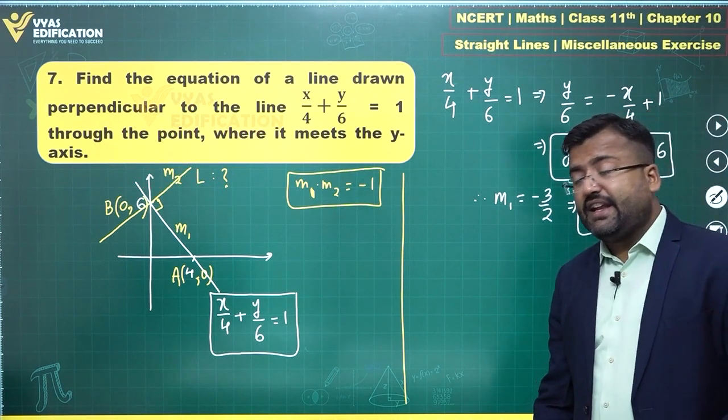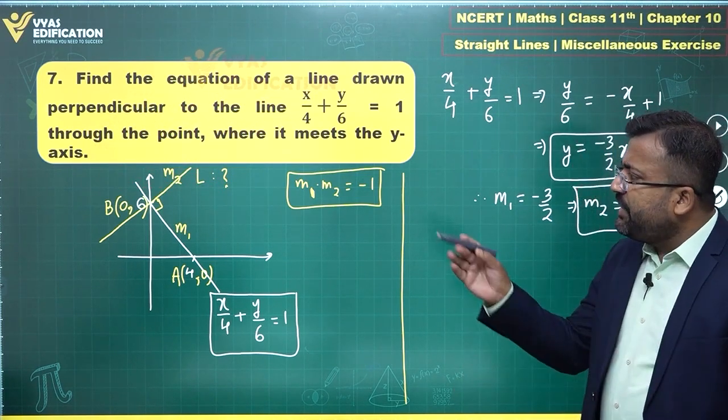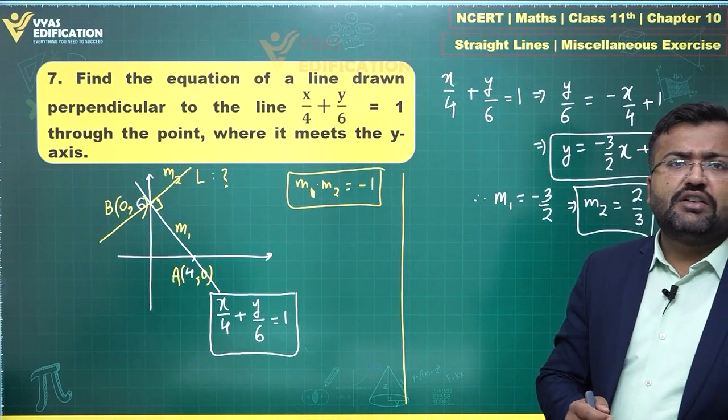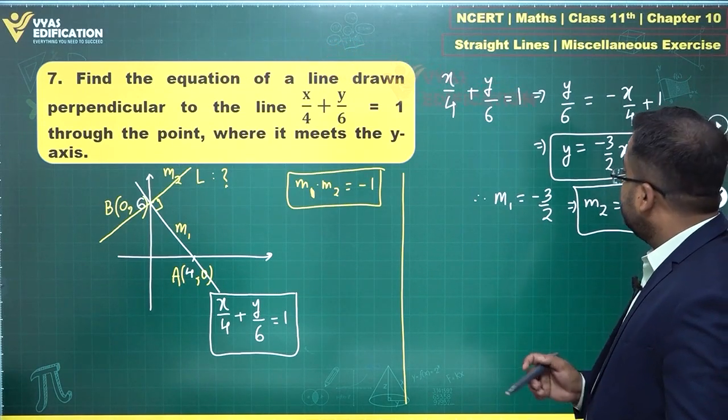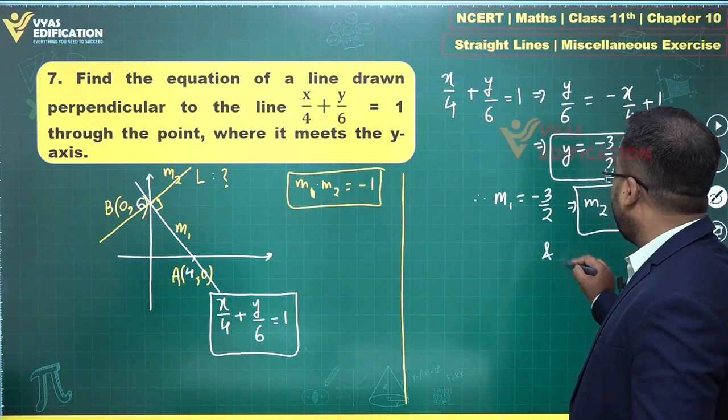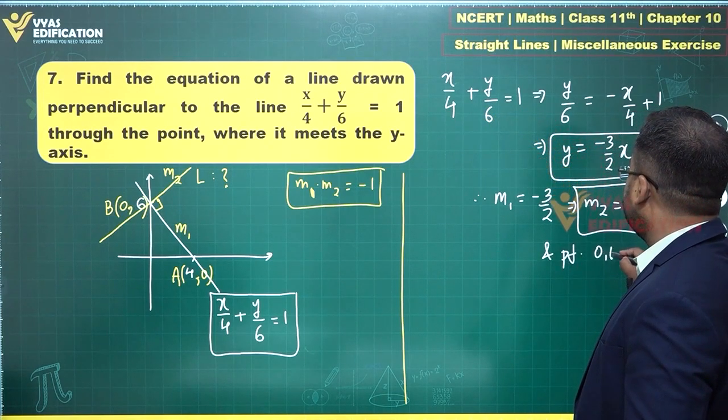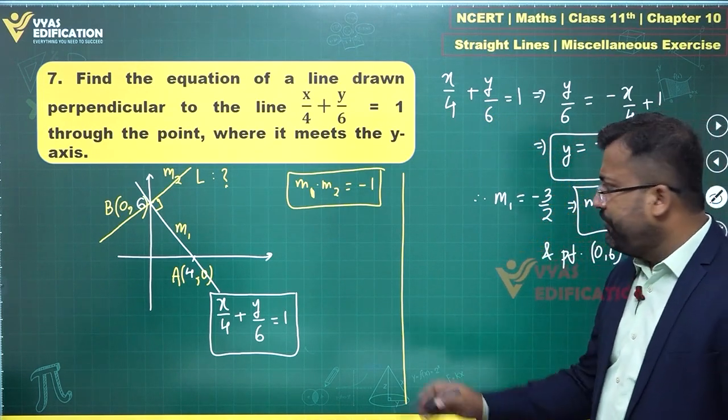The slope of line L is 2/3 and it passes through the point (0, 6). Since it passes through the point (0, 6), let's use the point-slope form.